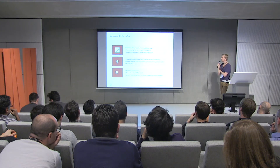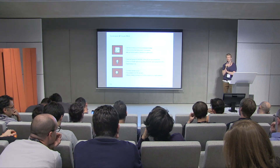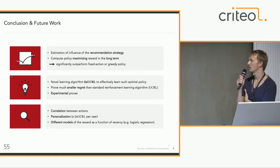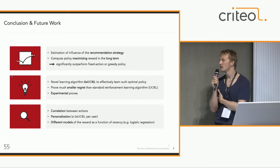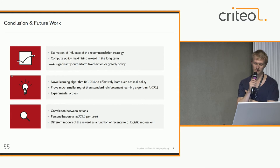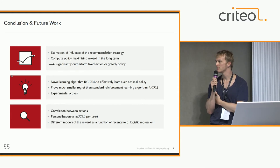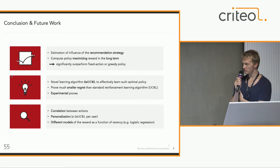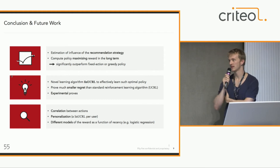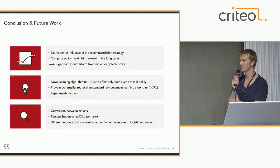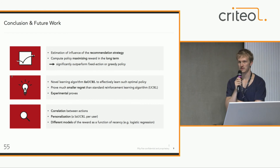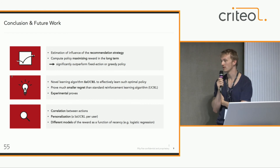To conclude, we propose a way to estimate the influence of a recommendation strategy and maximize reward in the long term. This is a better strategy than a fixed action policy or a greedy policy. We propose a novel learning algorithm called Linear SERL to learn such a policy, and prove a smaller regret bound than standard reinforcement learning algorithms, validated on several experiments. For future work, we propose to study correlations between actions and their impact on reward, personalization of the algorithm with user-specific model instances, and also to explore non-linear reward models beyond the linear recency function — for instance, models more suitable for click probability.